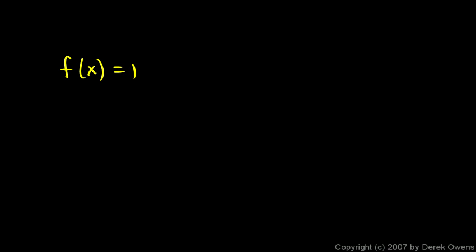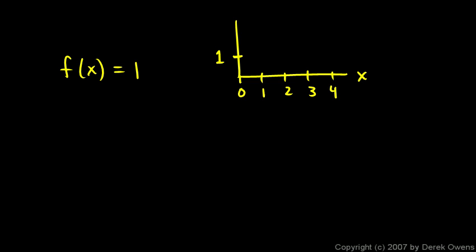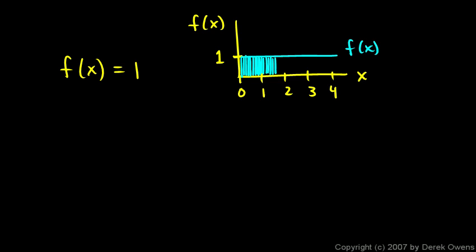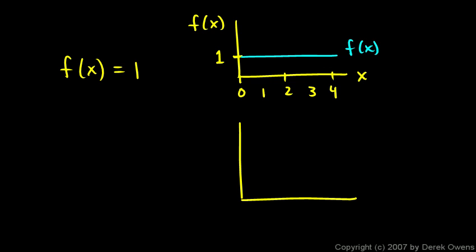We'll start off with a very simple example: f(x) equals 1. Hard to get much simpler than that, but let's graph it. x will go from 0, 1, 2, 3, 4. Those are x values, and the value of the function is just going to be constant at 1. Here's f(x), and the function will look like a straight line at 1. Now what we want to do is imagine starting at 0 and moving to the right — as we go to the right, we enclose more and more area. We imagine this little vertical line moving further and further along to the right, and the area enclosed gradually increases.